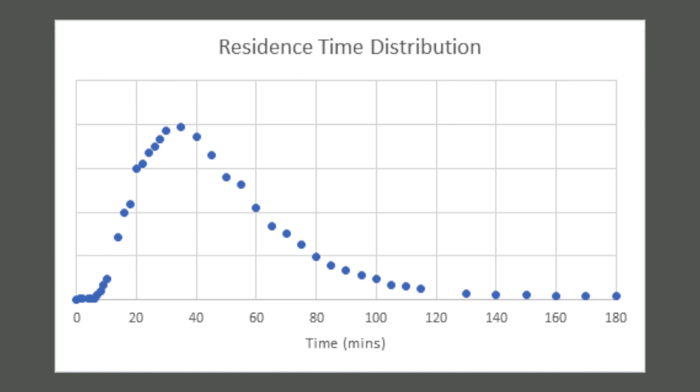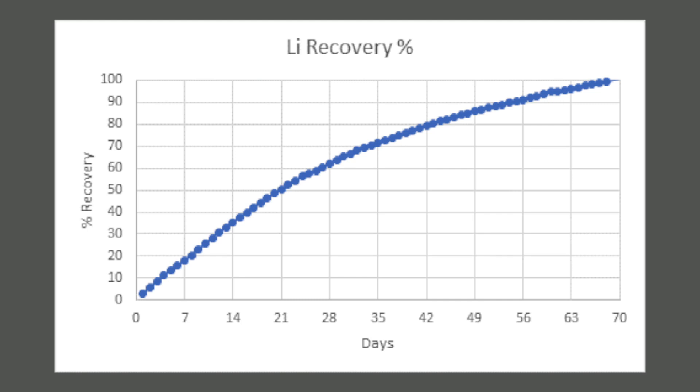Accounting for the flow, and using calculation methods described by Octave Levenspiel — that's Chemical Reaction Engineering, 1974 — the flow and concentration can be converted into a residence time distribution curve. Recovery curves can also be created. Visual and statistical analysis of the data in the graph provides an assessment of the plug flow characteristic, the short circuiting, and the active volume.